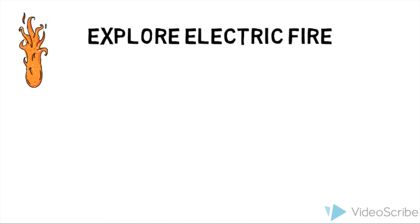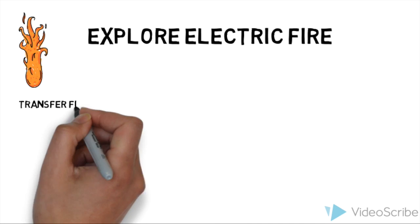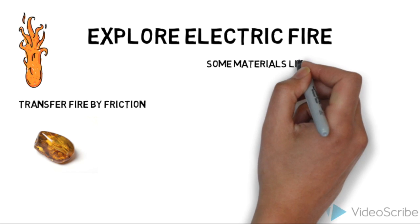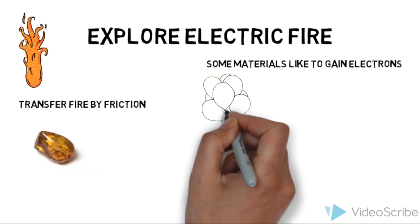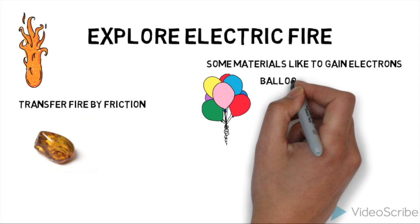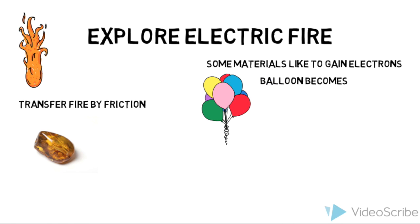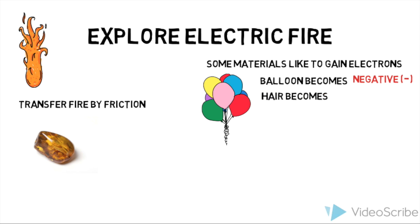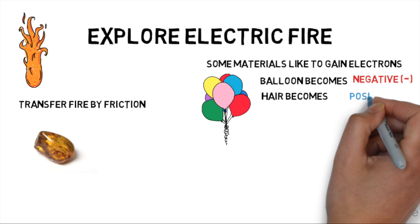We can transfer this electric fluid by friction. Going back to amber, some materials like to gain electrons, and some materials like to give up electrons. When you rub a balloon to your hair, electrons travel from your hair to the balloon. Therefore, your hair is positively charged due to the deficiency of electrons, and the balloon is negatively charged because the balloon has gained electrons. And this is the whole idea behind the law of conservation of charge.